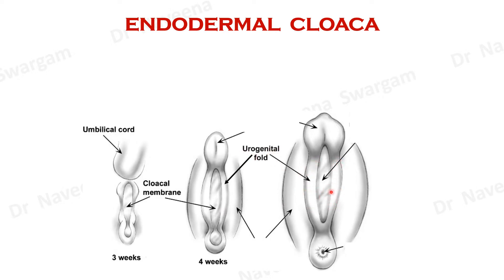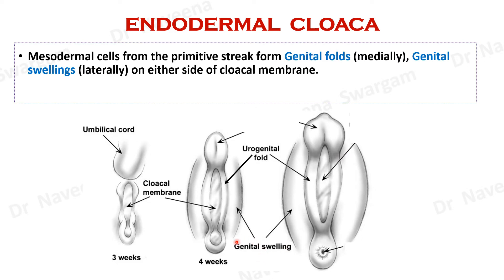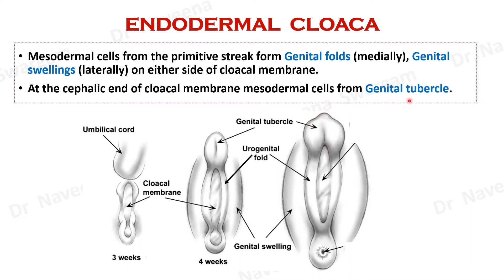The migrating mesodermal cells form raised margins on either side of the cloacal membrane known as urogenital or genital folds. Lateral to them, they raise the ectoderm to form larger swellings known as genital swellings. Further, the mesodermal cells migrate towards the cephalic end of the cloacal membrane to form a tubercle known as genital tubercle.